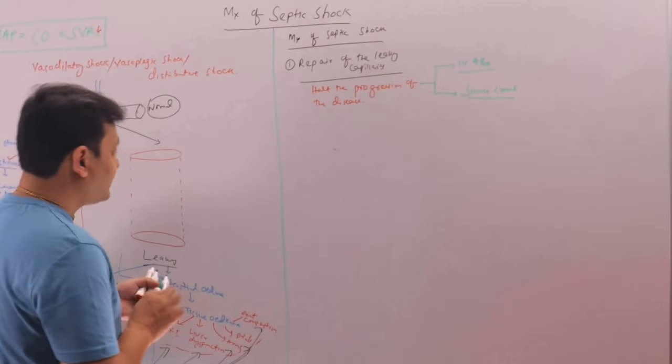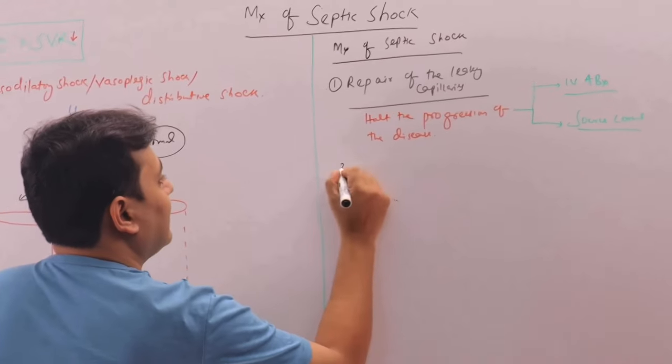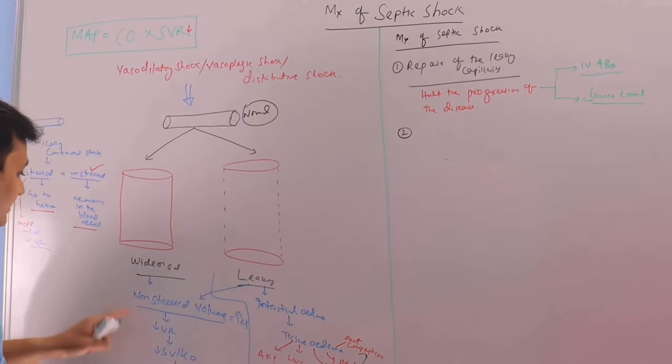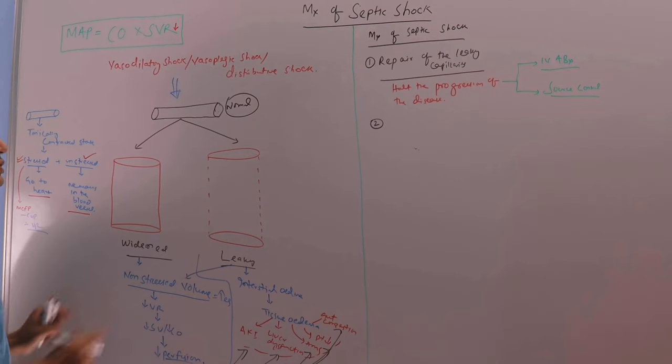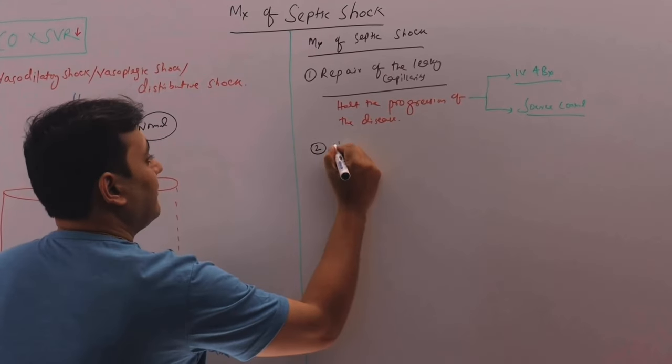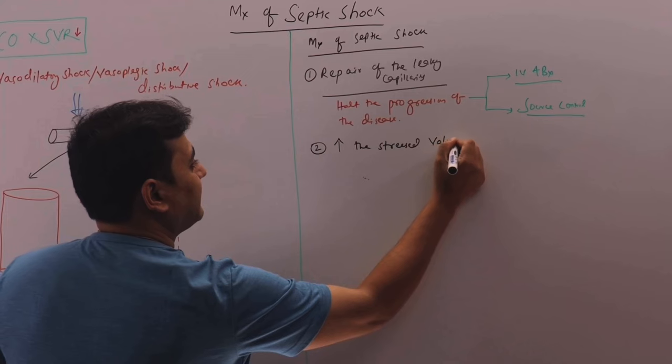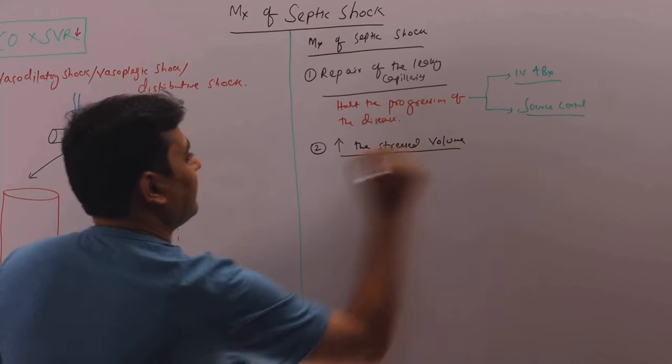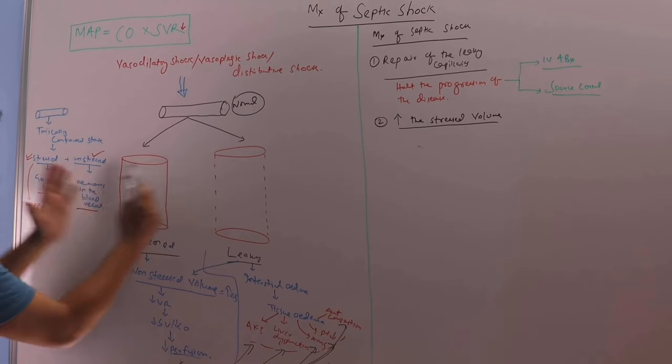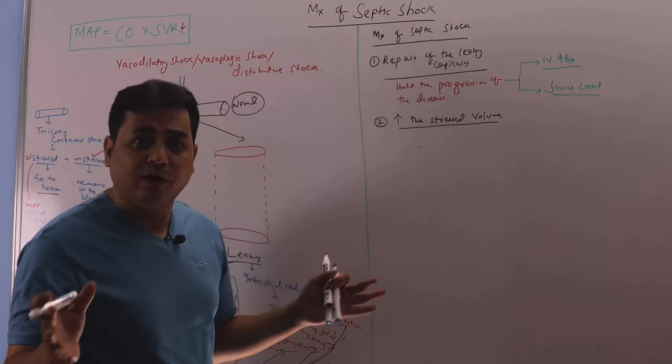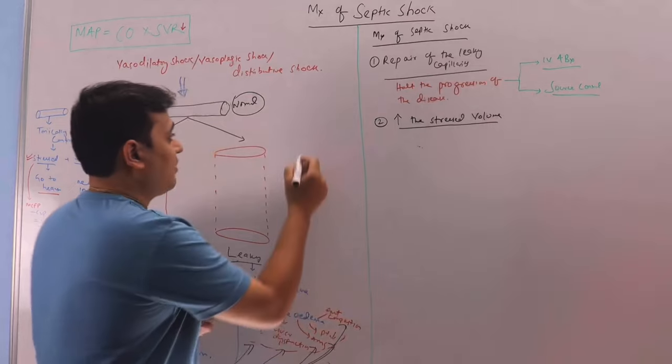And second concept is we have seen here the non-stress volume increases that means the stress volume decreases. So we have to increase the stress volume. So how to do that? Pathophysiologically, the vessel has become broadened. So this is a relative hypovolemia, this is a functional hypovolemia.